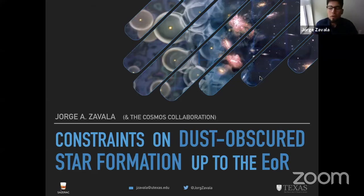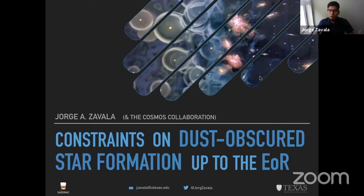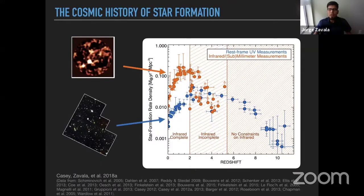I'd like to thank the organizers for this meeting and for giving me the opportunity to talk about these results. This is work done as part of the COSMOS collaboration. We are going to present some constraints or estimation of the dust-obscured star formation rate density up to redshift 6 to 6.5, which is close to the epoch of reionization. Let's start with the cosmic history of star formation.